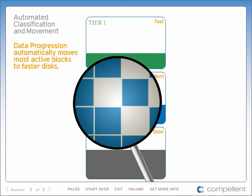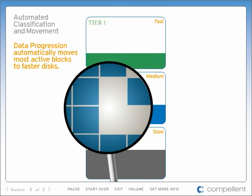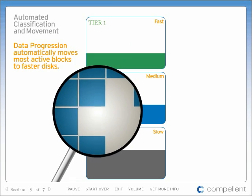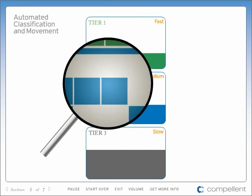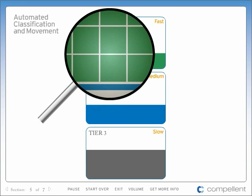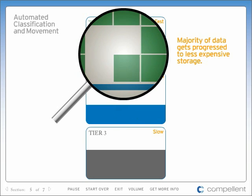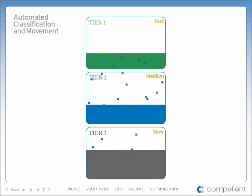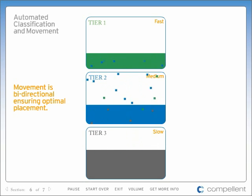Compellent calls this data progression, and it can be implemented in just minutes on Storage Center without any ongoing administration to monitor or manage data movement. Everything takes place automatically, based on actual data usage. The most active blocks of data are progressed to faster, high-performance disks, while the inactive data — the majority of stored data — gets progressed automatically to less expensive storage. Data progression's movement is bi-directional, so blocks of data move up and down tiers of storage over time as the rate of access changes. This ensures optimal placement based on the frequency of access and eliminates the need for time-intensive company-wide data classification efforts.